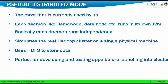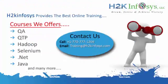In pseudo distributed mode, each daemon — like name node, data node, etc. — runs in its own JVM. Basically, each daemon runs independently. JVM is a Java Virtual Machine, so every process runs under its own Java Virtual Machine, meaning all are not interrelated; everything is independent. So if one process goes down, there is no rule that another process also needs to go down. This is where we are going to install through our VM. It simulates the real Hadoop cluster on a single physical machine, so all the processes need to run on their own.